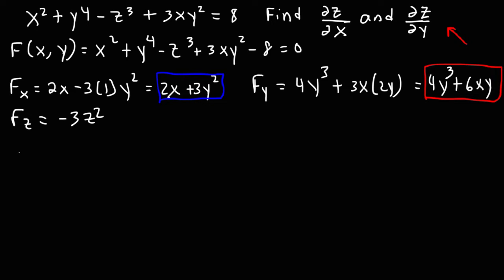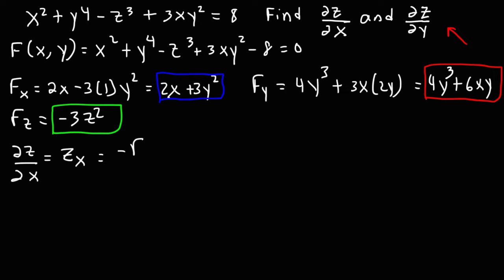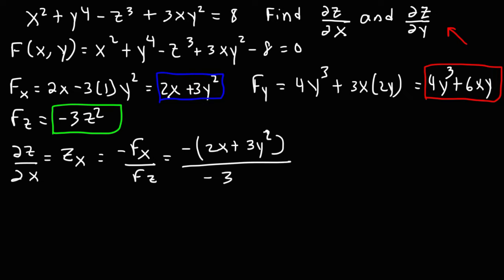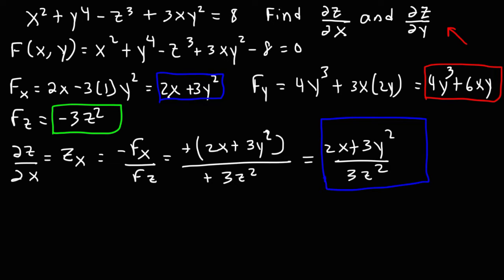Now that we have that, we can calculate the partial derivative of z with respect to x — z sub x. Z sub x is equal to negative f sub x over f sub z. So that's negative times 2x plus 3y squared divided by negative 3z squared. We can cancel out the negative sign, giving us 2x plus 3y squared over 3z squared. That's the partial derivative of z with respect to x.